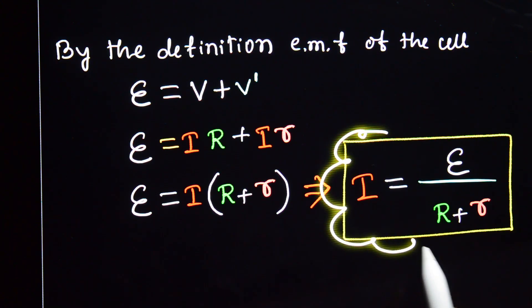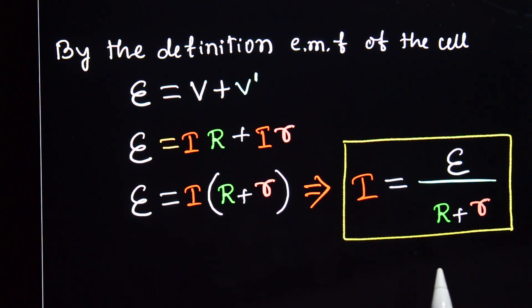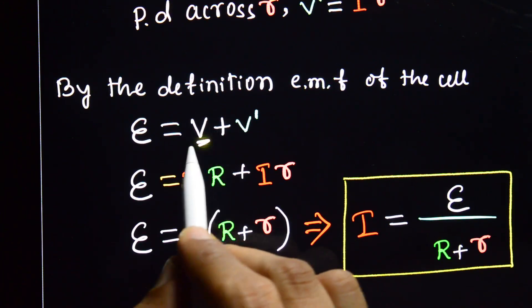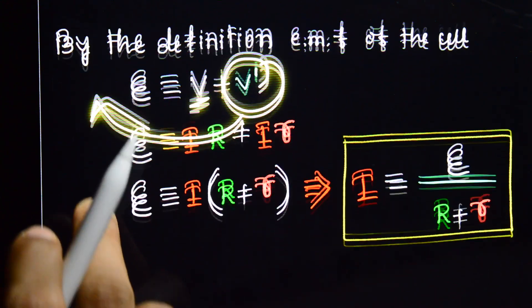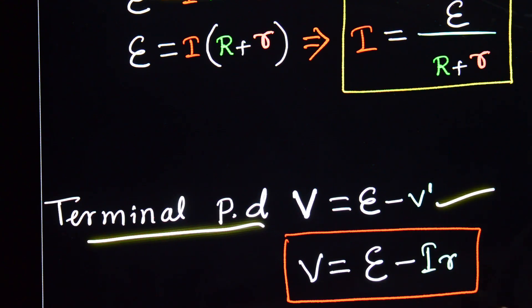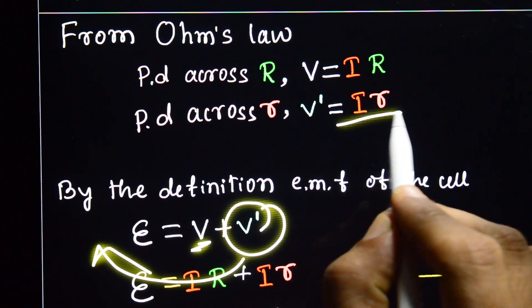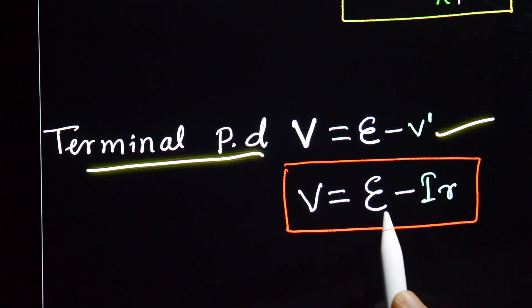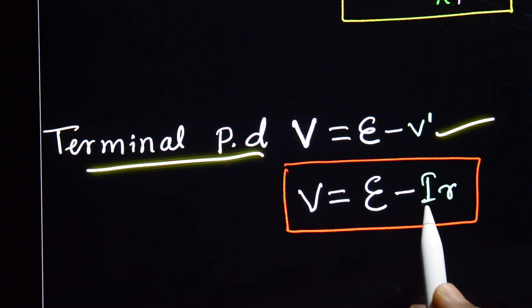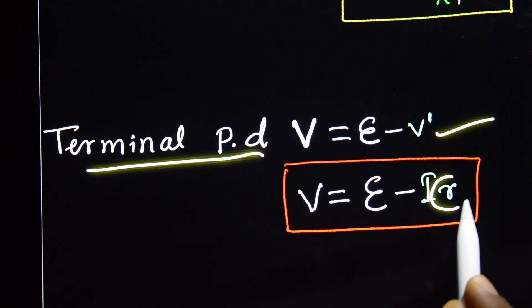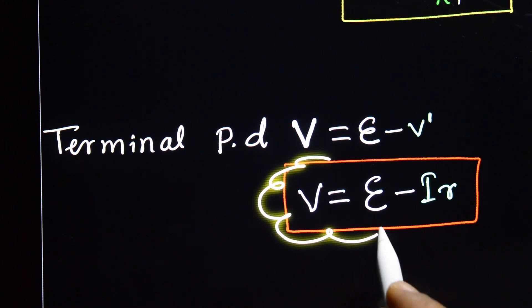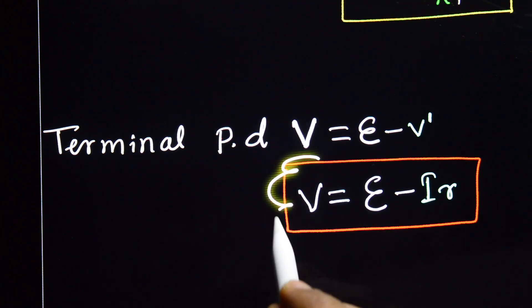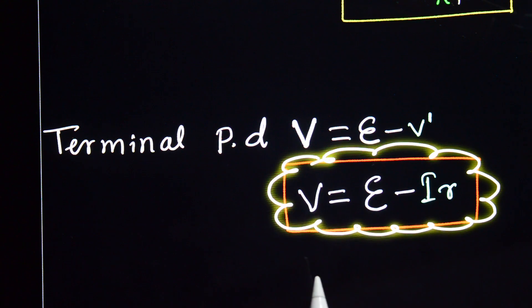This equation is very helpful in numerical problems. Another important result is the terminal potential difference: V is equal to E minus I into r — that is, EMF of the cell minus current in the circuit multiplied by internal resistance of the cell. This equation is very important for the next topic — cells in series and parallel.